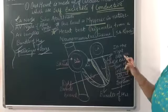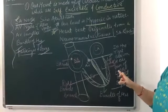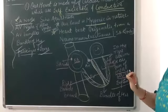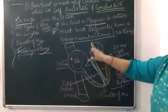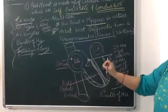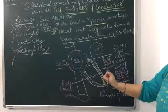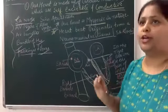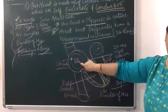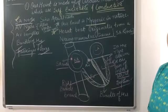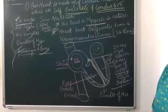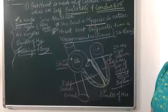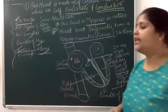However, the number of action potentials that can be generated in a minute varies at different parts of the nodal system. In one minute, whatever action potentials are generated differ at different parts of the heart muscles, and the maximum action potentials are generated in the right atria — that is, the SA node — the sino-atrial node.